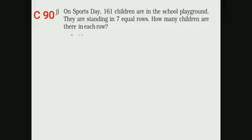We are going for the next sum, that is C90 classwork sum. On sports day, 161 children are in the school playground. They are standing in 7 equal rows. How many children are there in each row? We are going to find out. Before finding out, you should write the statement.